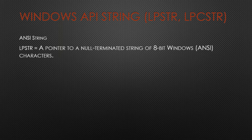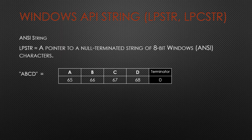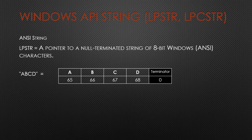Now let's think about the Windows API. In our previous video we encountered data types which are pretty much the standard for strings in the API: LPSTR or LPCSTR. These are ANSI strings. The definition of LPSTR is: a pointer to a null-terminated string of 8-bit Windows ANSI characters. In memory, the short text ABCD would be represented as the characters' numerical values stored as bytes, with a zero terminator at the end indicating where the string ends.